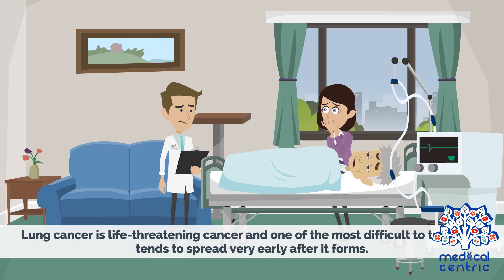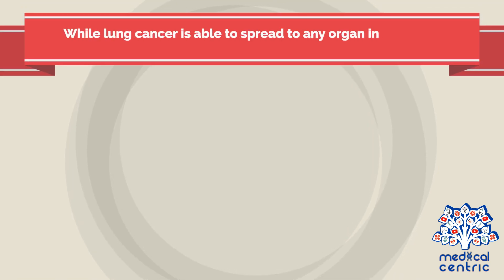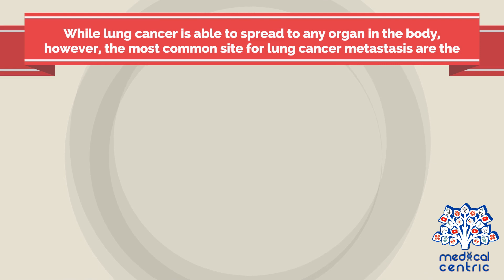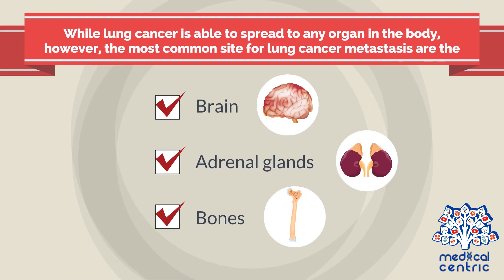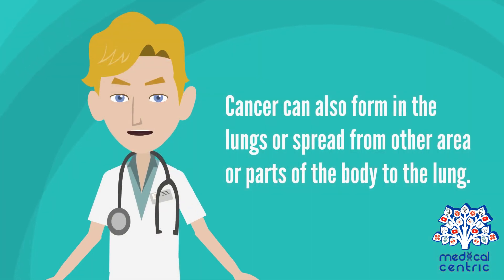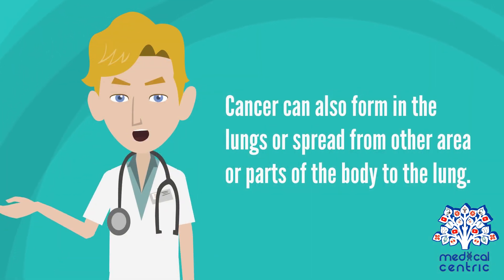Lung cancer is life-threatening and one of the most difficult to treat, as it tends to spread very early after it forms. While lung cancer is able to spread to any organ in the body, the most common sites for lung cancer metastasis are the brain, adrenal glands, and bones. Cancer can also form in the lungs or spread from other parts of the body to the lung.